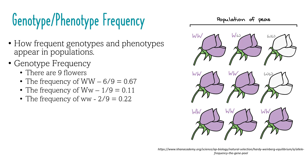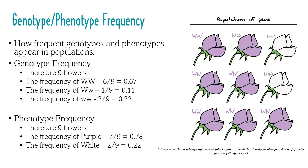To calculate the phenotypic frequency — that is, the observed trait — we look at how many flowers express the purple trait and how many express the white trait. In this example, 7 out of 9 express the purple trait, and 2 out of 9 express the white trait.